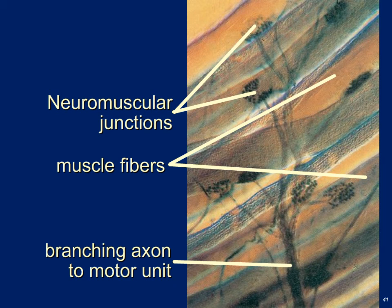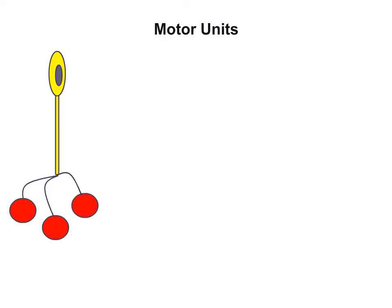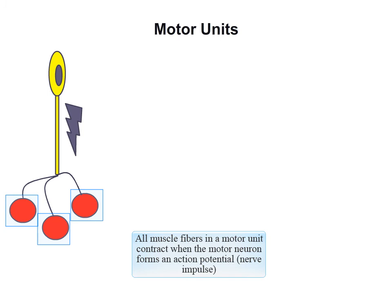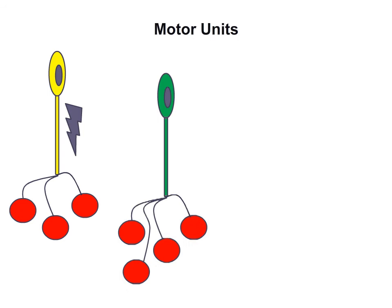Looking at a simple example: one motor neuron connected to three muscle cells — when that motor neuron fires an action potential, it travels down the axon to all three muscle cells, causing contraction of all three simultaneously. Because it controls only three muscle cells, it won't result in a very strong contraction. A second motor unit controls four muscle cells — when that neuron fires, all four cells contract simultaneously, giving a slightly stronger contraction. Your body can decide how many motor units to activate: for a small contraction maybe just the small motor unit; for a stronger contraction, both motor units together.